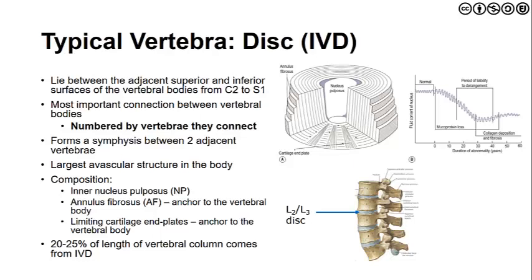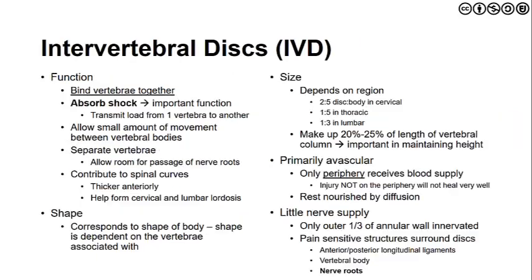When young, the discs are fairly normal. Over time, mucoprotein loss occurs along with a period of potential derangement. Eventually, collagen deposition and fibrosis develop, leading to a loss of fluid content in the nucleus pulposus and degenerative changes within the disc. The disc not only adds height but also binds the vertebrae together, transmits load, and absorbs shock, making it very helpful in distributing and attenuating forces.